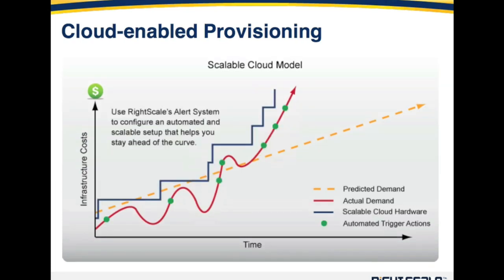Along comes the scalable cloud model, and what you see here is the exact same predicted demand and actual demand, but as a result of these green dots — the automated trigger actions — the environment is able to automatically and dynamically scale, adding resources, infrastructure, and servers to accommodate increased load. Since we're able to do this automatically, you can keep your infrastructure ahead of your actual demand curve, and you'll never see a case where actual demand exceeds infrastructure capacity, nor a huge amount of underutilized resources. The same concept works in reverse: if demand decreases, servers are shut down, saving on infrastructure costs.